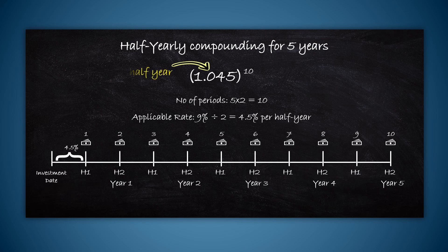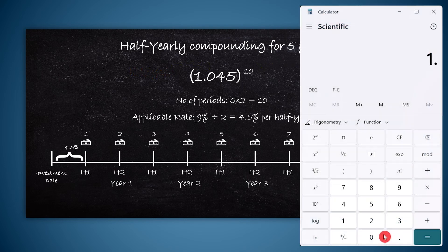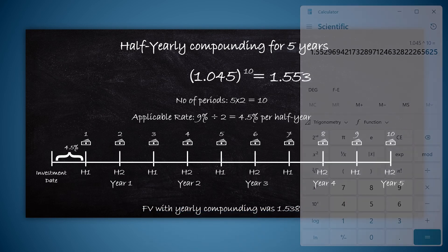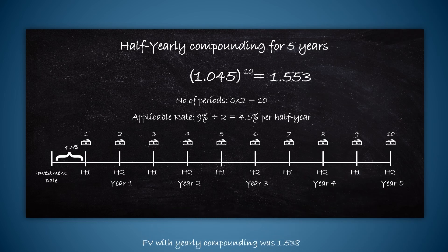Since all the numbers are now in terms of half years, the formula is correct and we can proceed with the calculation. 1.045 to the power 10 becomes 1.553. Previously we got 1.538, now it is 1.553. Because we are compounding more number of times, the impact of compounding is also higher.